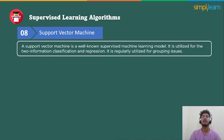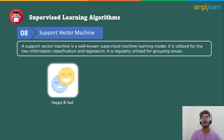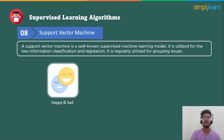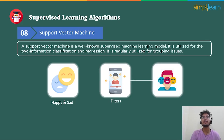A support vector machine is a well-known supervised machine learning model utilized for both data classification and regression, though it is regularly used for grouping problems. For example, it can be involved in life care systems, in happy and sad look arrangement, and in filters — if we make a specific expression, it would add a particular filter according to that expression, where the scope of expression lies between happy and sad.